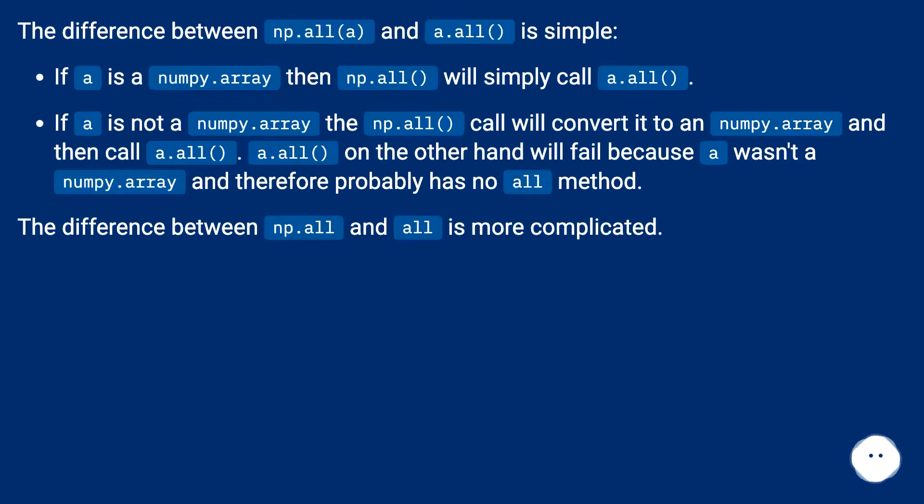The difference between np.all and a.all is simple. If a is a numpy.array, then np.all will simply call a.all.